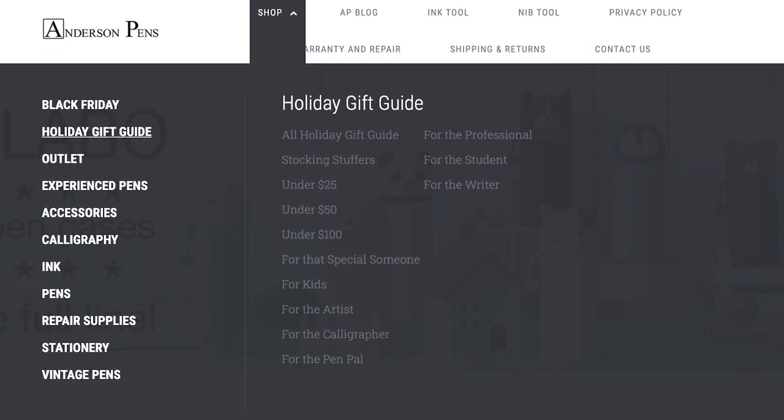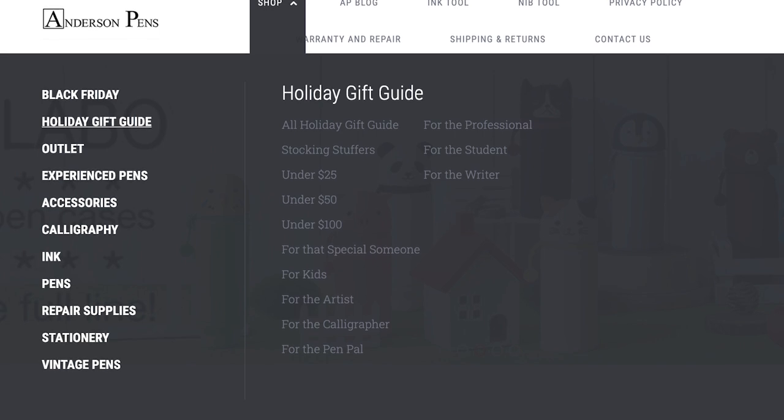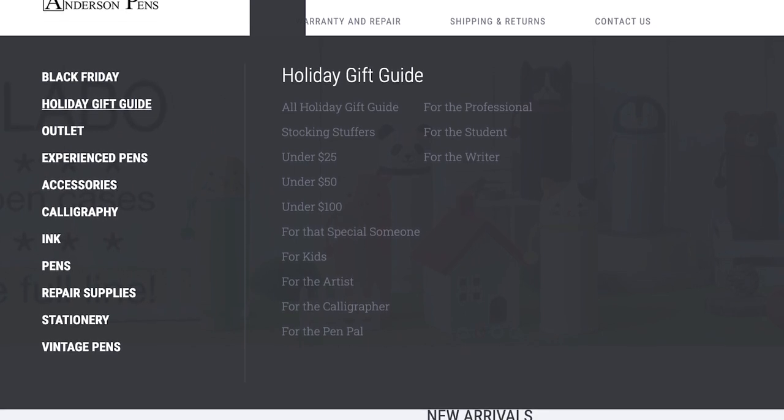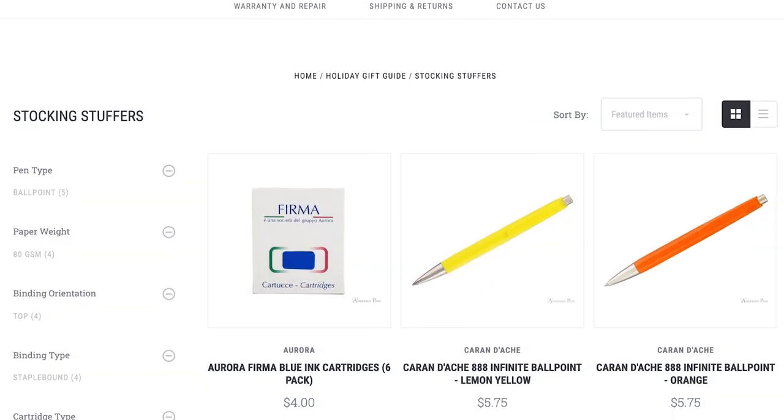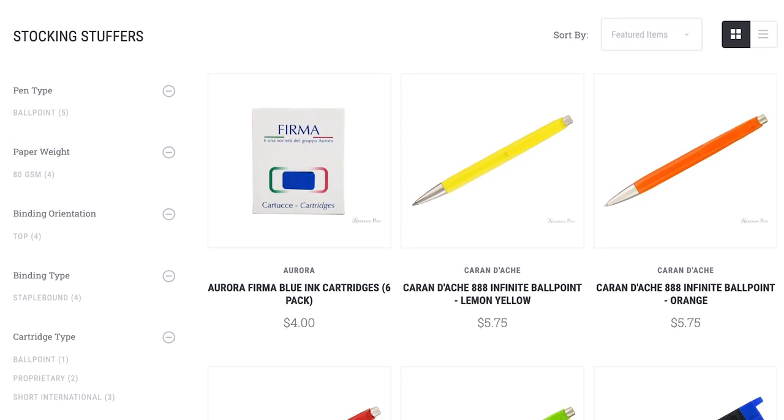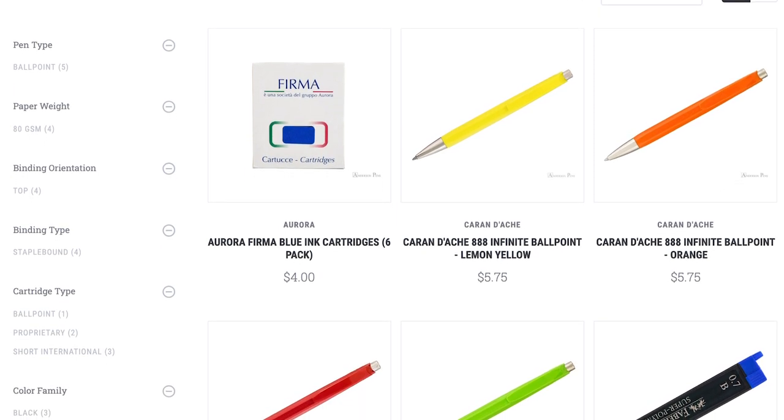It's after Thanksgiving which means diet time. The holiday gift guide, which we have up on the website, we have a number of categories to try to help you fill your Christmas list: under $25, stocking stuffers, under $50, under $100, for the calligraphy person. Let me read them off to you. Ideas for the artist, the calligrapher, the writer, the student, the professional, someone special, for kids, for the pen pal. We have Punilabos in there. We have a lot of pen, paper, ink suggestions in there to help you out. If that doesn't work for you, we've got 5,000 other products.